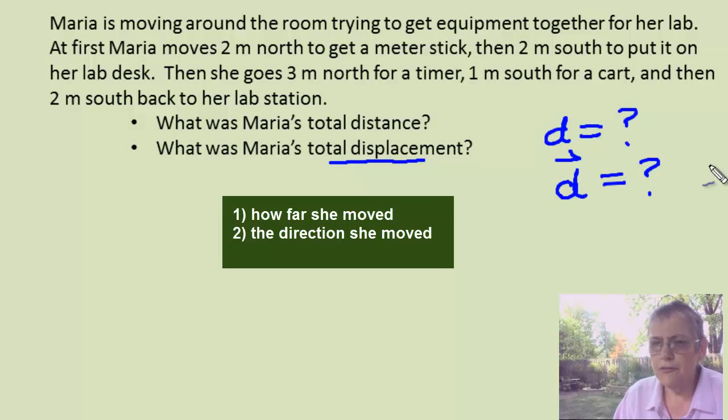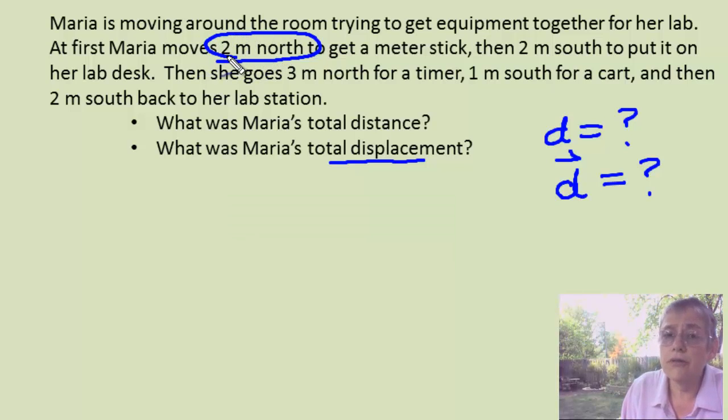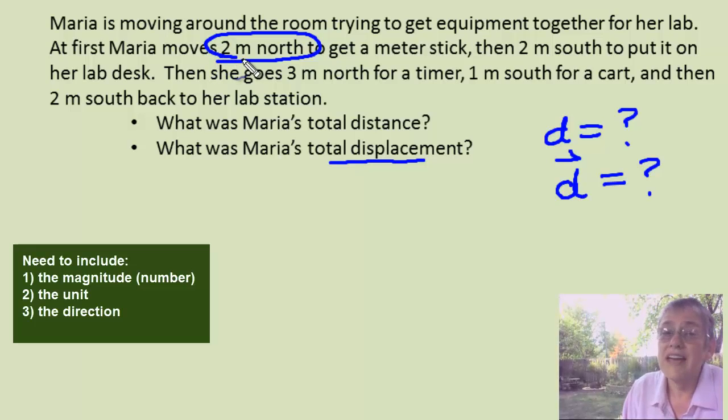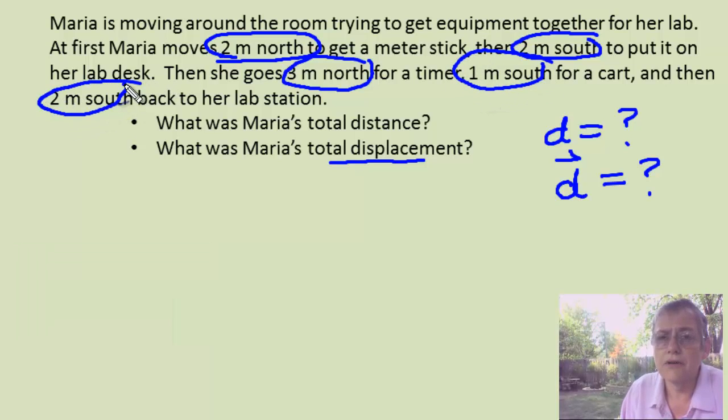When you have a lot of information listed in a problem, it's sometimes handy to go back and just simply circle the information that you're hunting for. Two meters north. The direction is important. So I'm circling north. The number is important, how far you're going. And the units are important. Another one here, it's two meters south. Another one, three meters north. Another one meter south. And finally, two meters south back to her lab station.